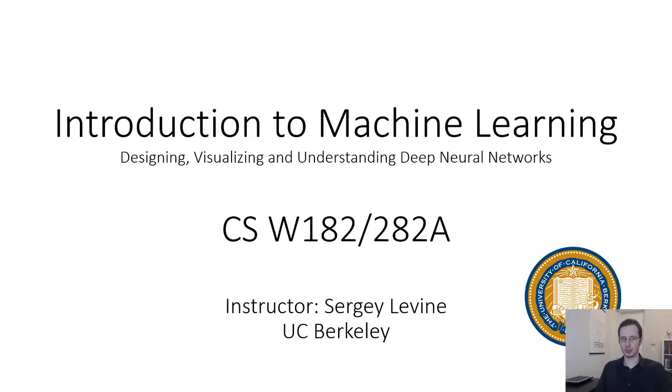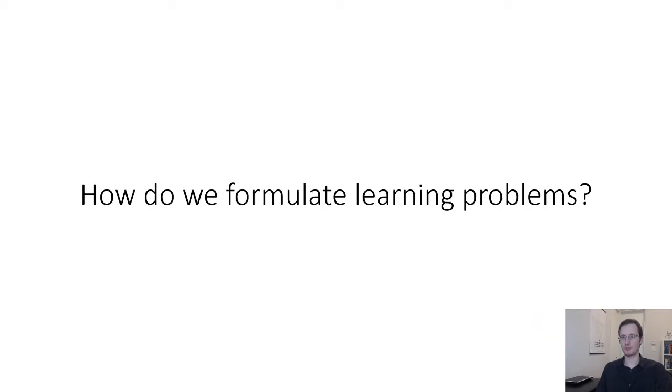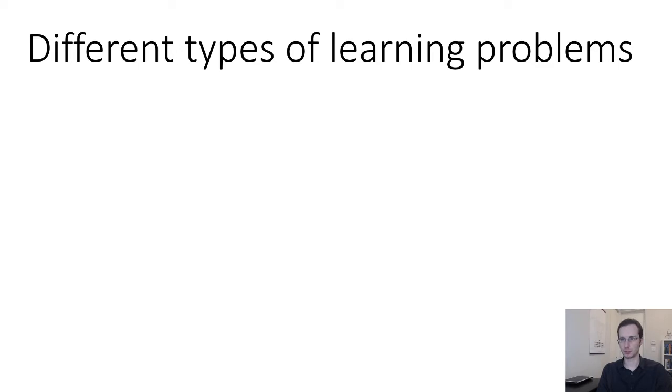All right, welcome to Lecture 2 for CS 182-282. In today's lecture, we're going to go over some basic concepts in machine learning, which in later lectures will connect up to deep learning. So let's start off with the first question. How do we formulate learning problems? There are a number of different problem settings that can be tackled in machine learning, and we'll go over one of the canonical categorizations next, although there are definitely other categorizations.